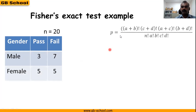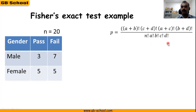Write the formula first: P equals (a+b)! × (c+d)! × (a+c)! × (b+d)! divided by n! × a! × b! × c! × d!. We know a is 3, b is 7, c is 5, and d is 5.